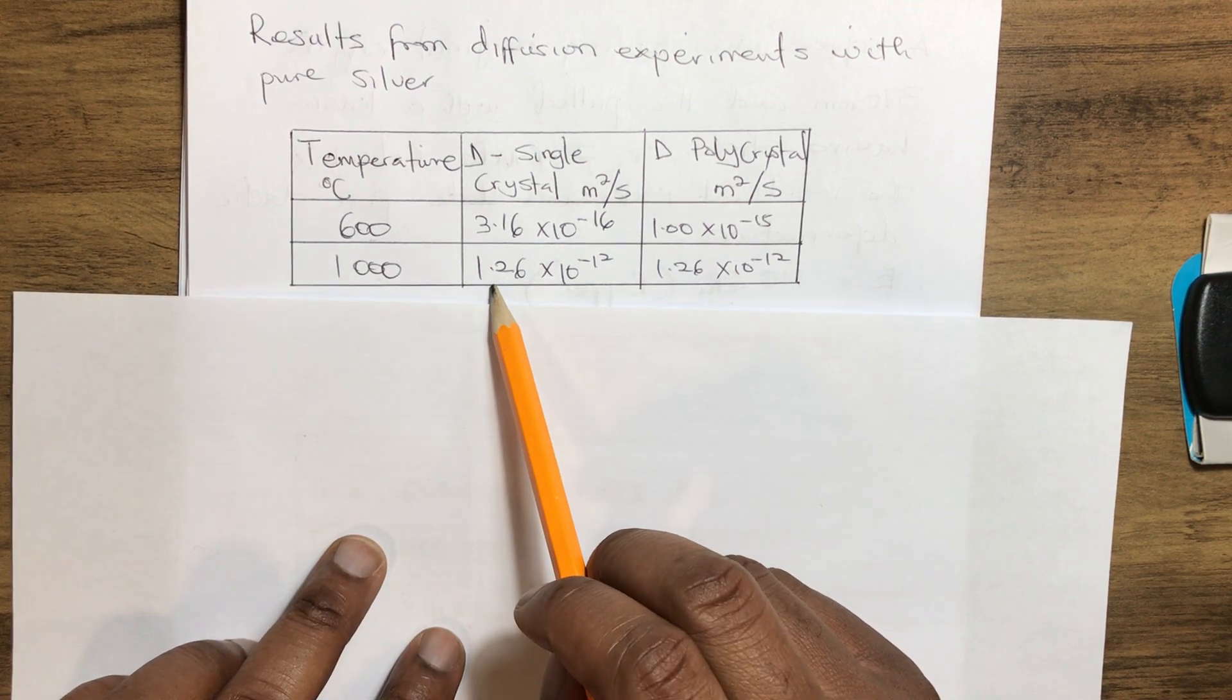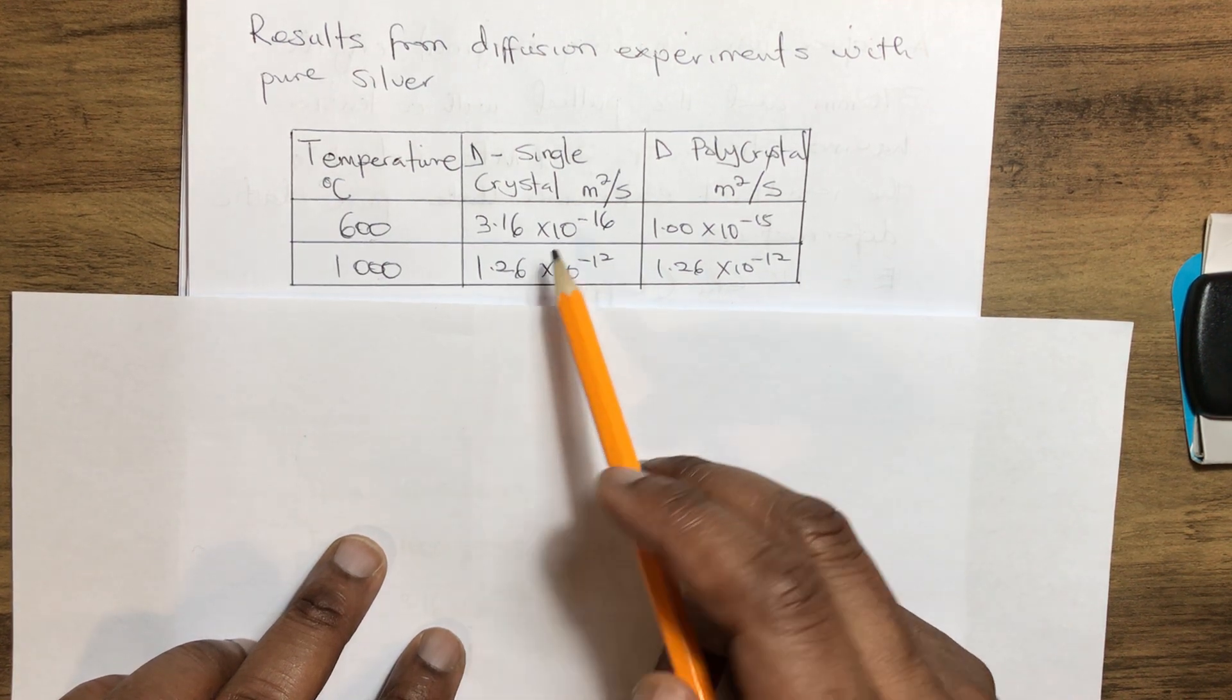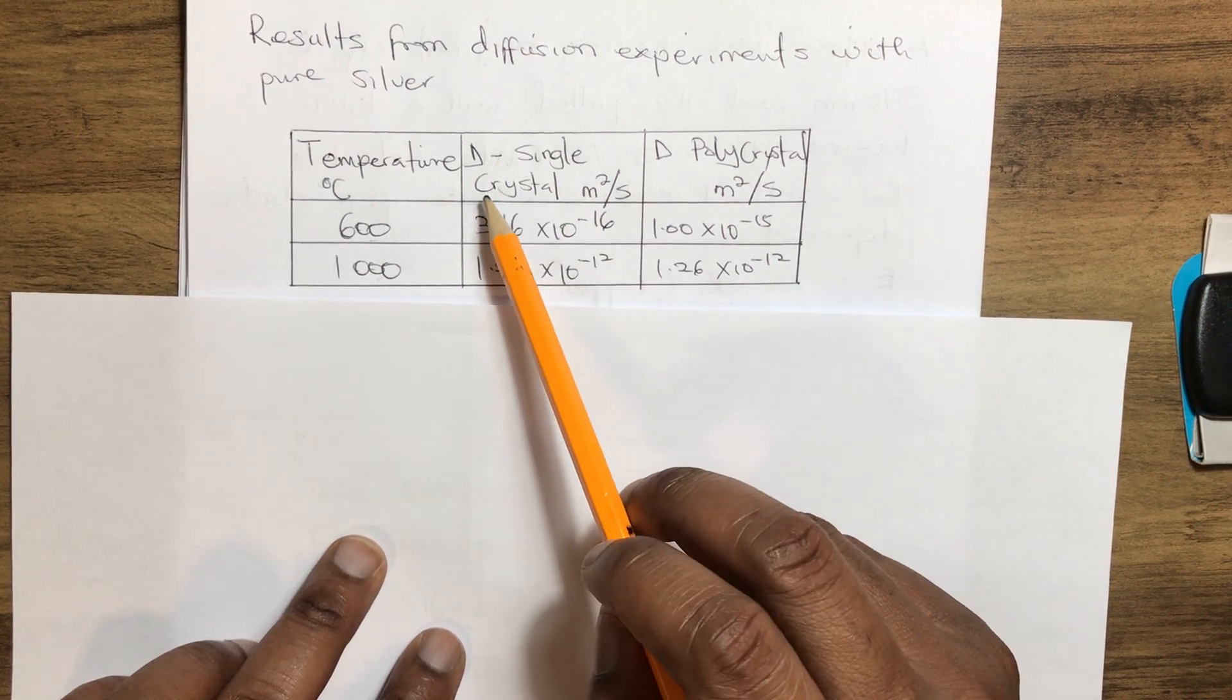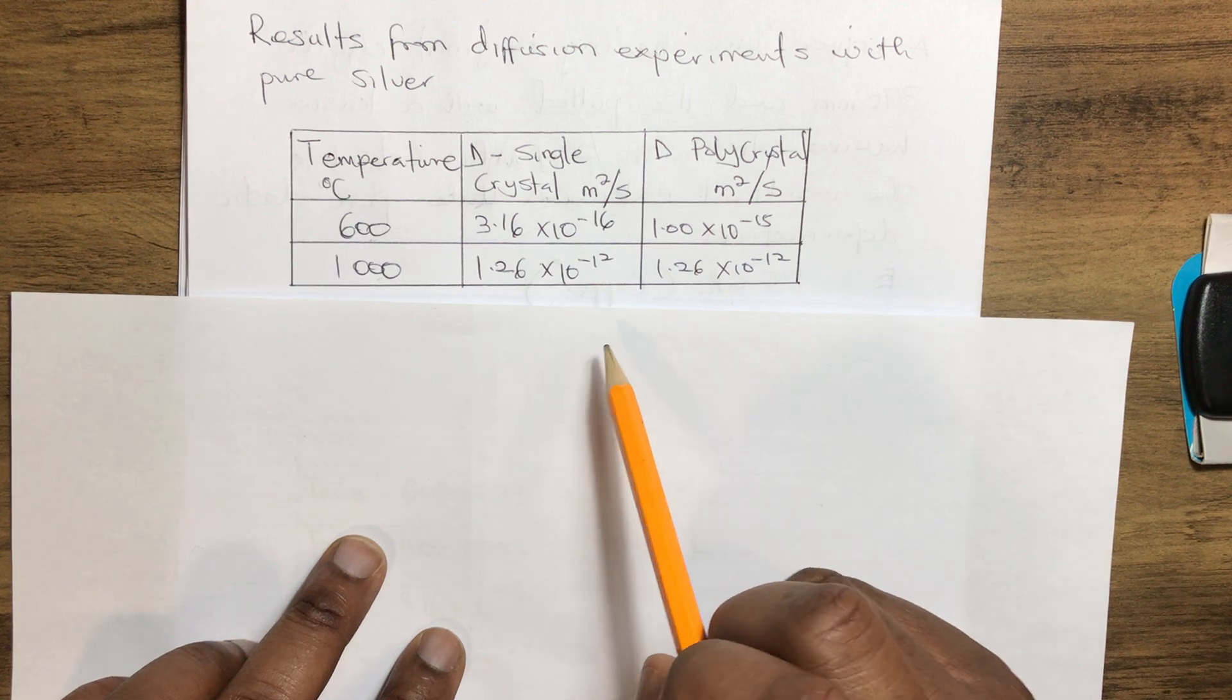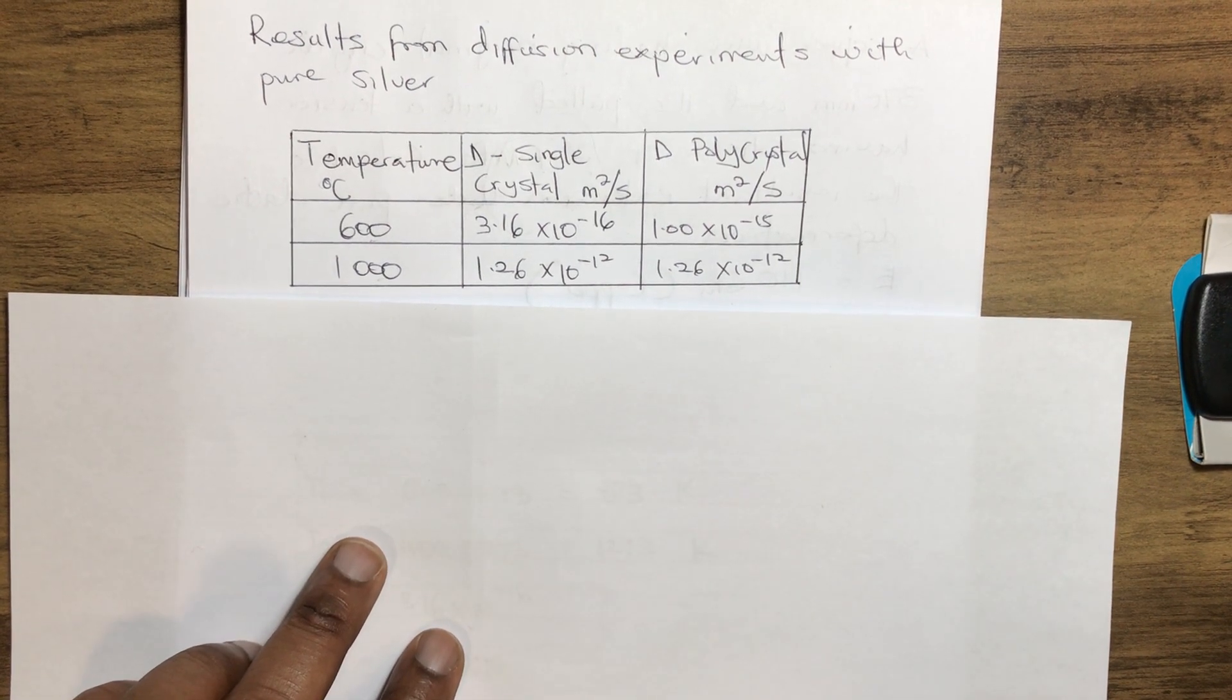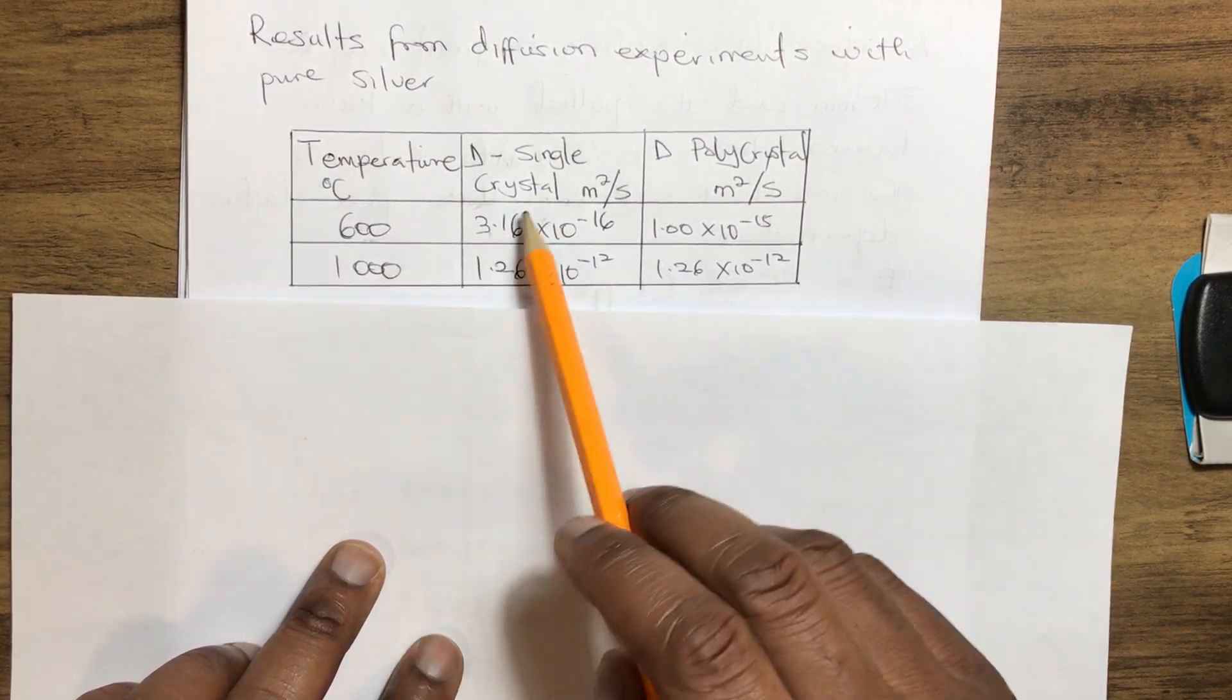Now we have to calculate the activation energy of the single crystals. To go ahead and do this, we need to pull out the two given parameters from the first column and the second column.